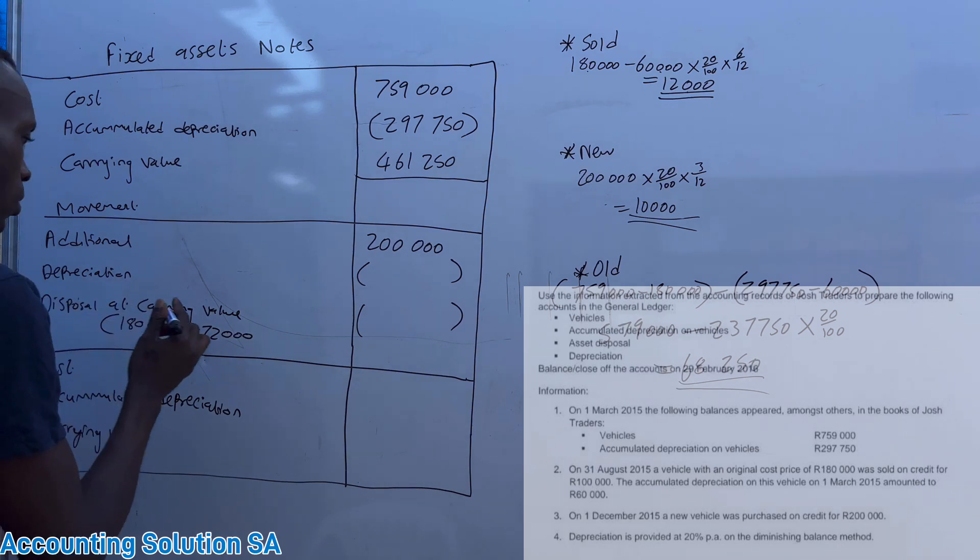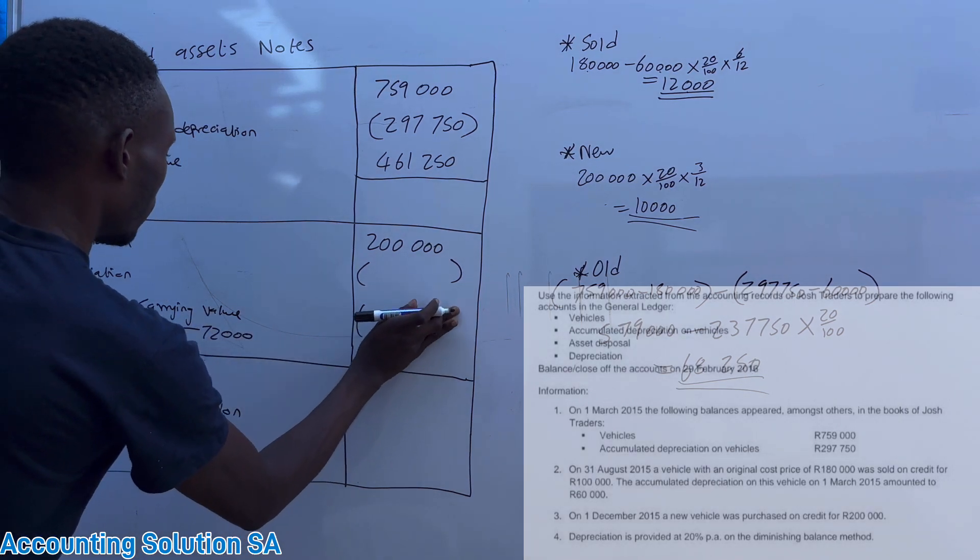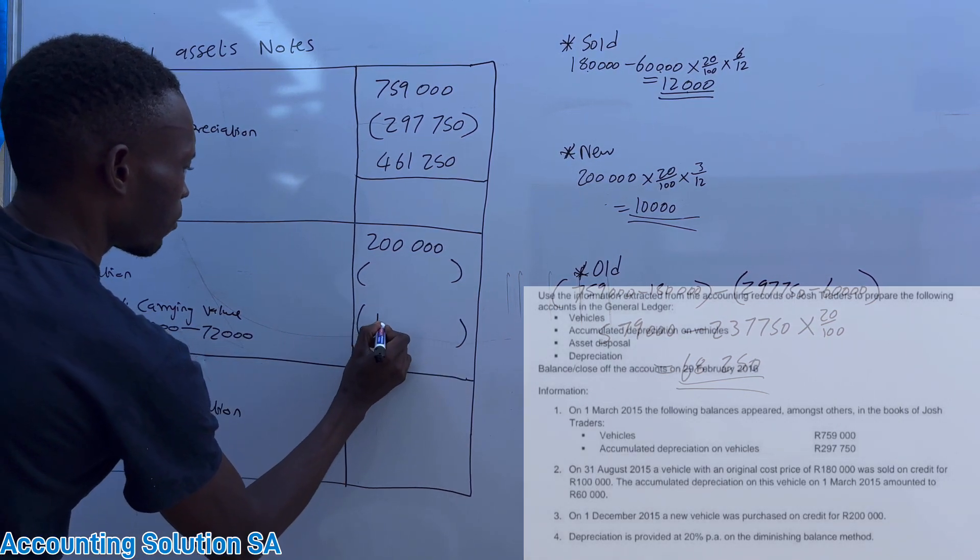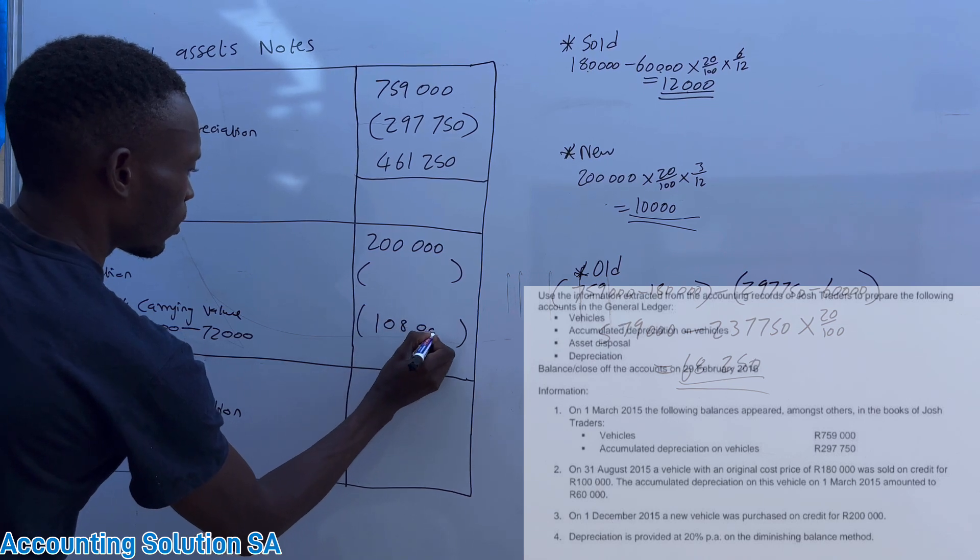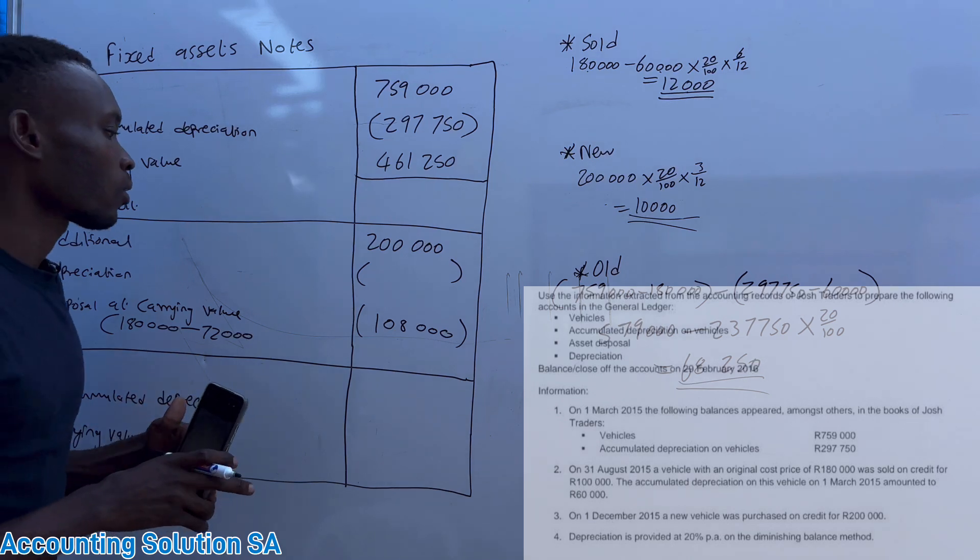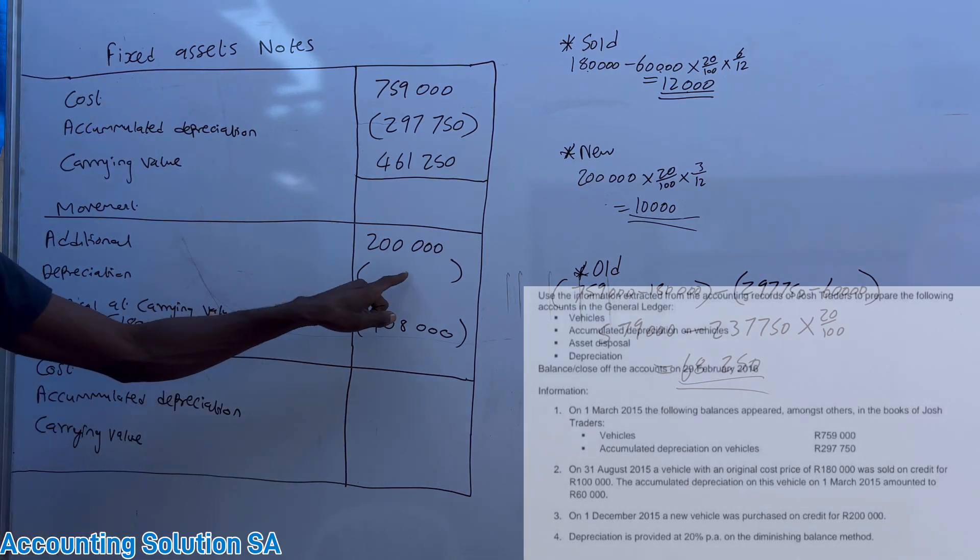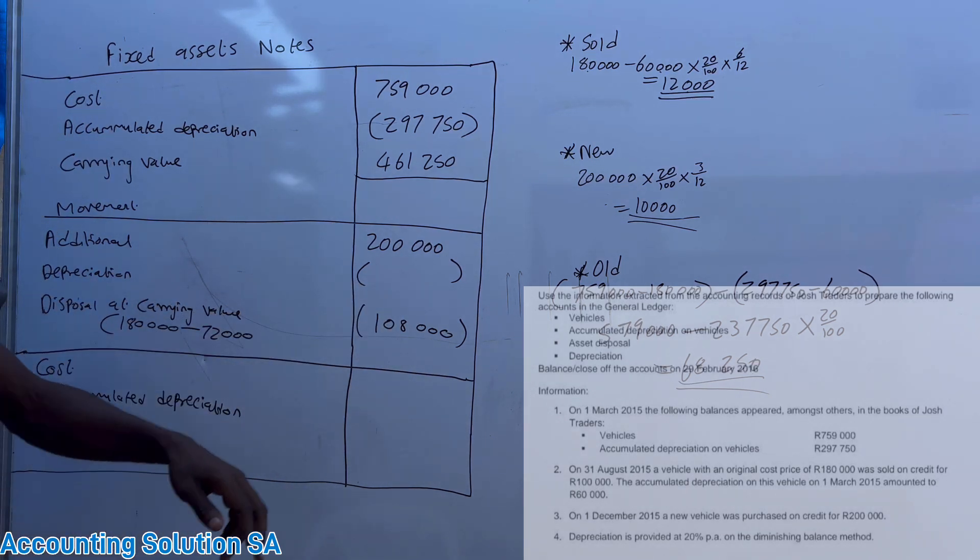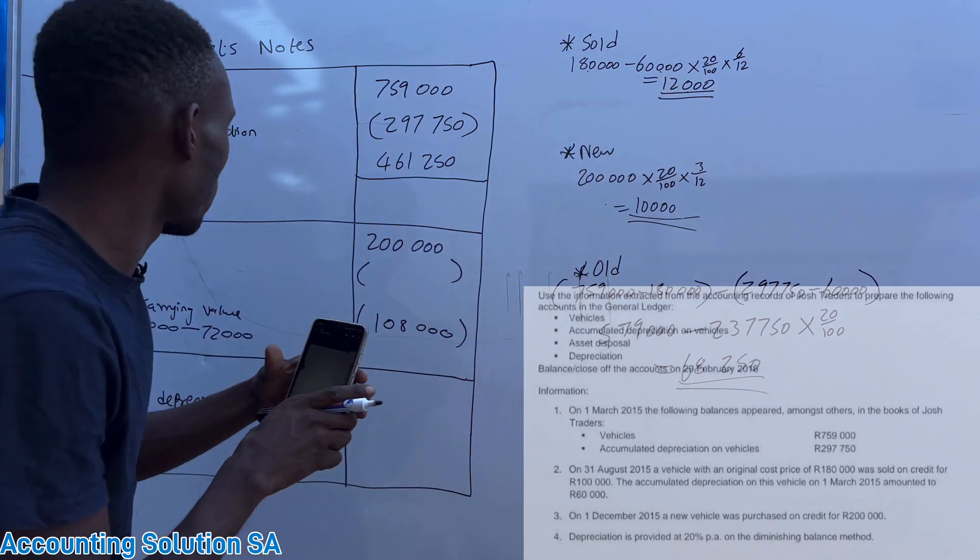It's gonna give you 108,000. 72,000 guys is 60,000 plus 12,000. Very simple. Now we can go back to depreciation. Depreciation, the first one we already calculated at 12,000.